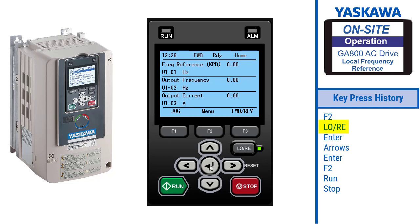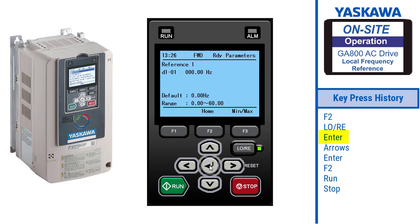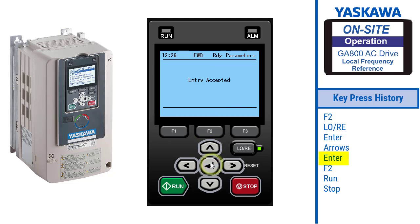Press Enter. The keypad will change to the D101 parameter screen. Using the arrows, change the reference frequency to 10 hertz. Press Enter. The drive will display entry accepted.